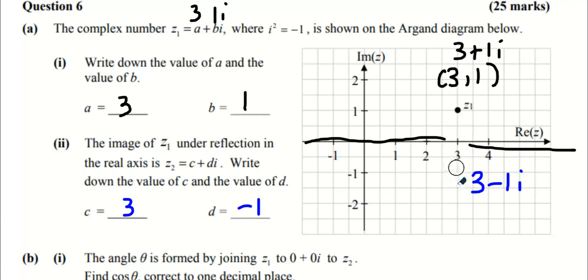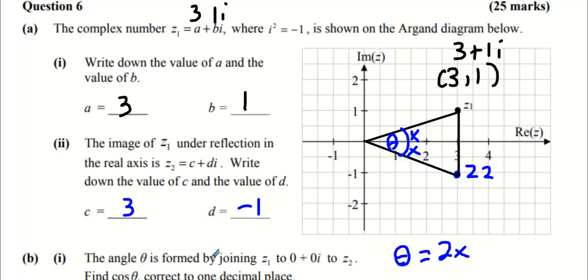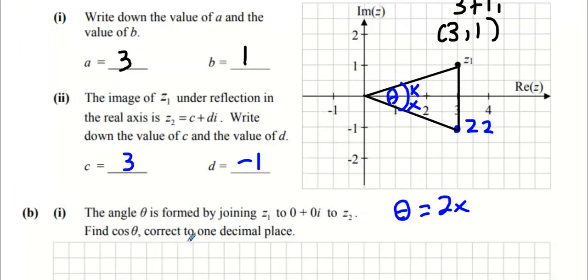The angle θ is formed when joining z₁ to z₂. So this is z₂ here. Basically, if I join the two of these together, I create an angle like in a triangle - I create this angle θ here. Now we can break that θ up into two angles where θ equals 2x. It says find cos θ correct to one decimal place.